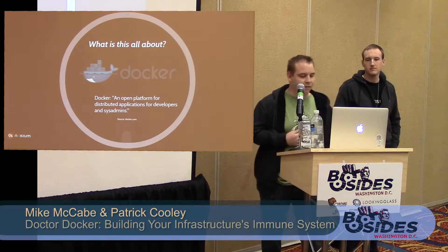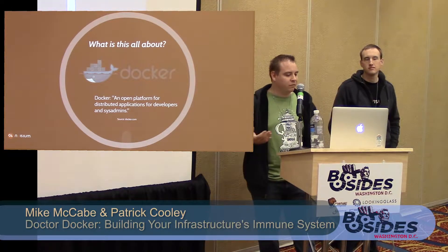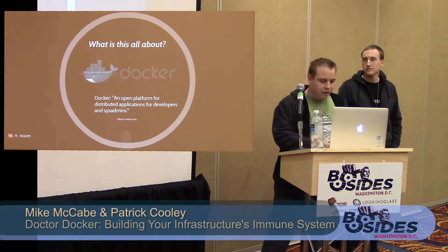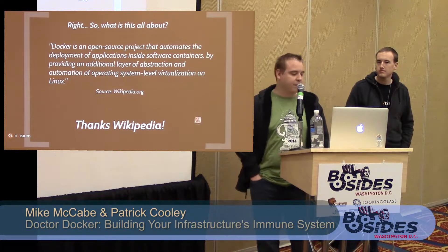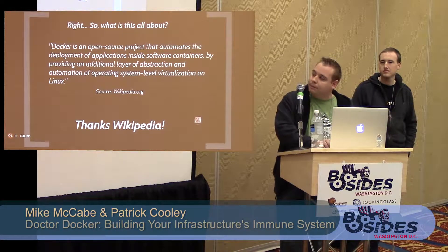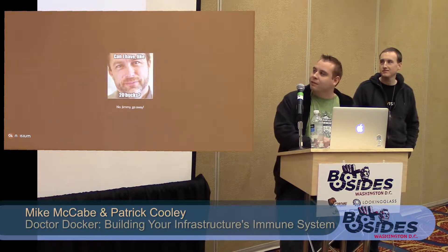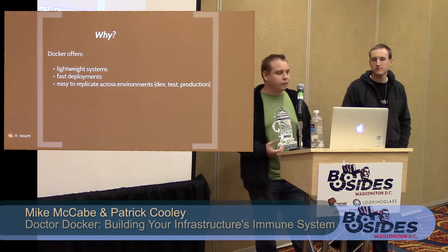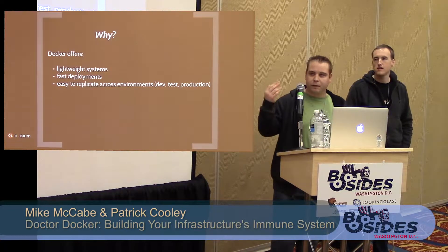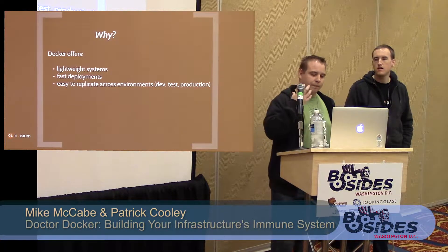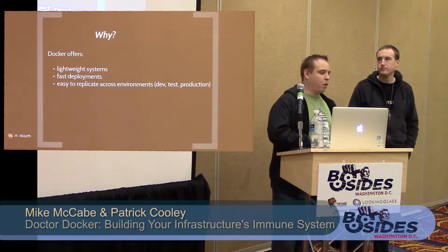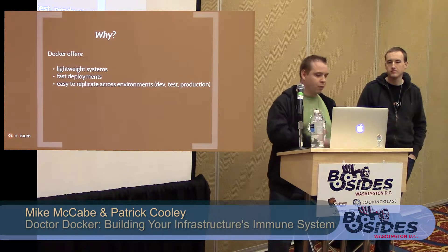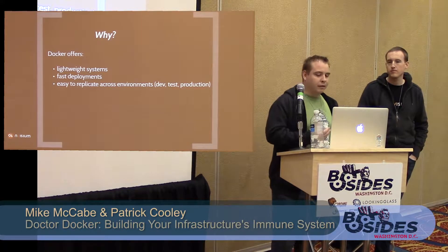According to Docker's website, their description of Docker as an 'open platform for distributed applications' doesn't really explain a whole lot. So I decided to go over to Wikipedia. What is Docker? It's lightweight systems. It allows really fast deployments. You can take what was done with containers for years and years but now you can version them, deploy them across different places, and reuse parts of images. It makes development a lot easier.